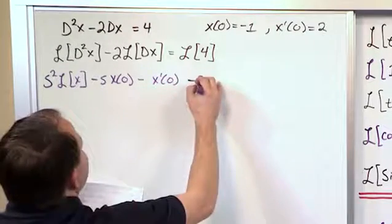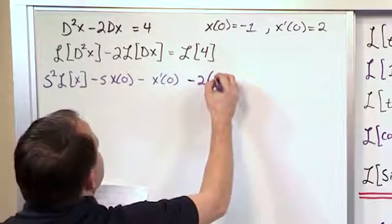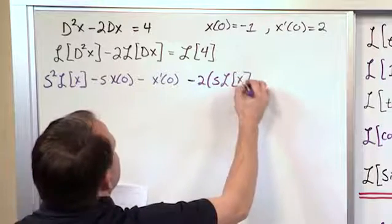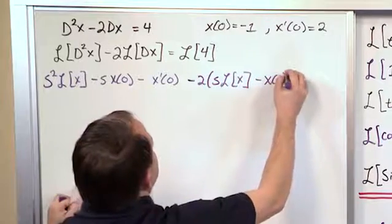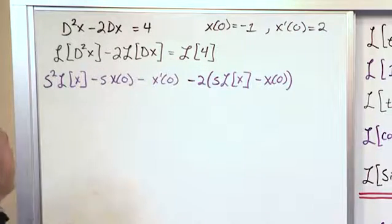And then we will have minus 2, and inside the parenthesis we'll write the Laplace for this, which will be s times Laplace Transform of x minus x(0). Only one s, no s² because this is just a first derivative.